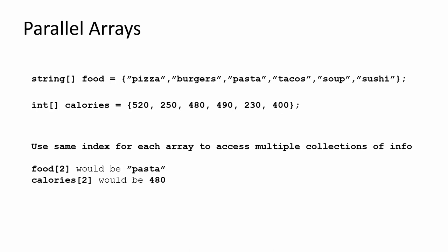For instance, if I wanted to access food index 2, that would be pasta. And calories index 2 would be 480. You just keep track of one index number and apply it across both arrays. You can certainly use more than two - I'm just showing two here.